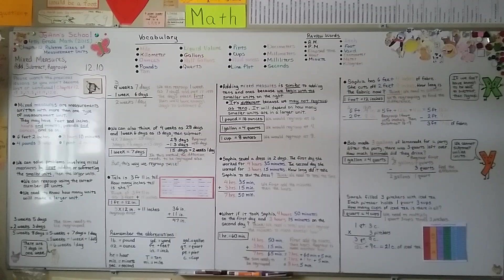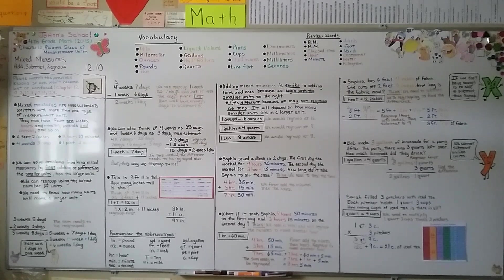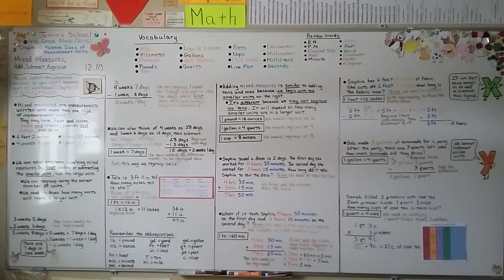Be very careful when regrouping units that you regroup them into the correct amount. It may not be tens — it could be sixteens, fours, eights, two-thousands, or sixties for minutes or seconds.